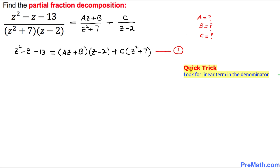Now we are going to use a quick trick: look for the linear terms in the denominator. The only linear term is z minus 2. We set z minus 2 equal to 0, which means z equals 2. We are going to plug that value into equation number 1.